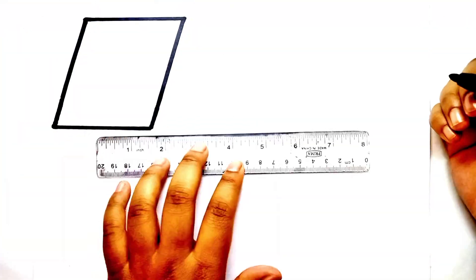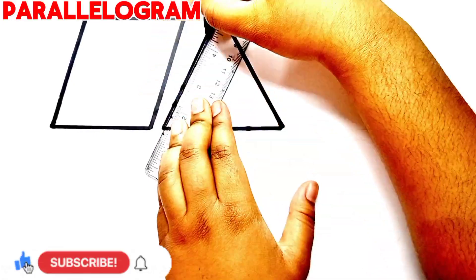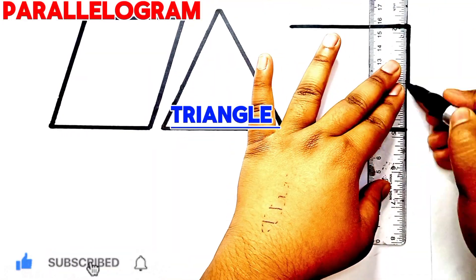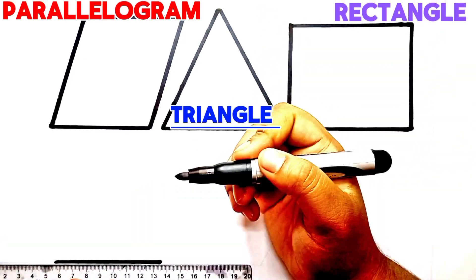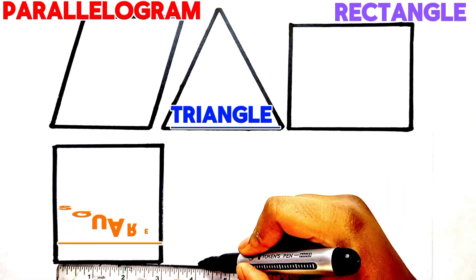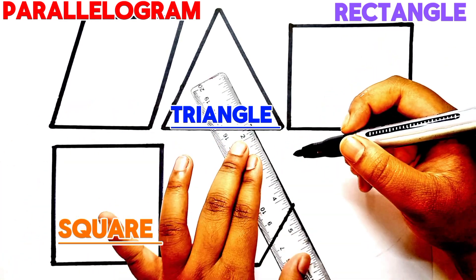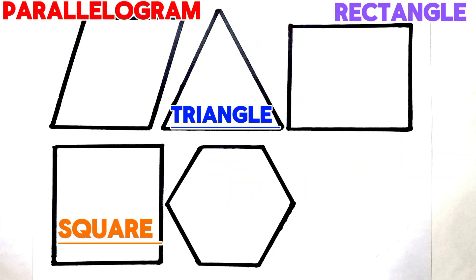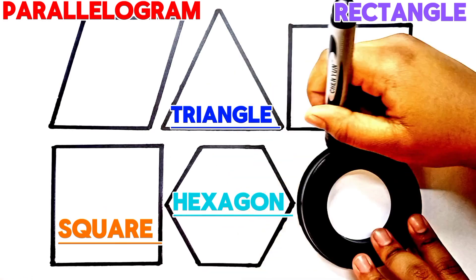This is a parallelogram. This is a triangle. This is a rectangle. This is a square. This is a hexagon. This is a circle.